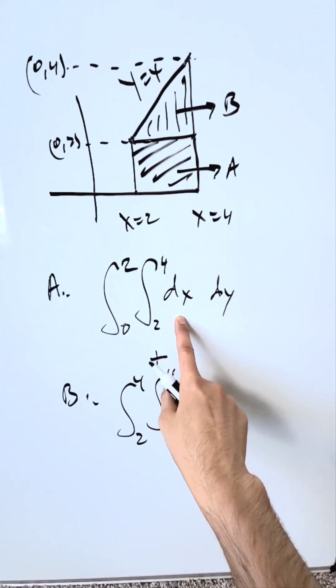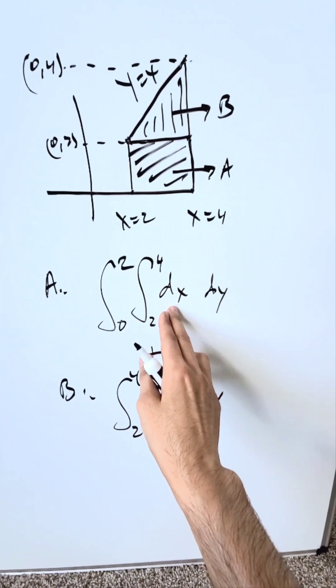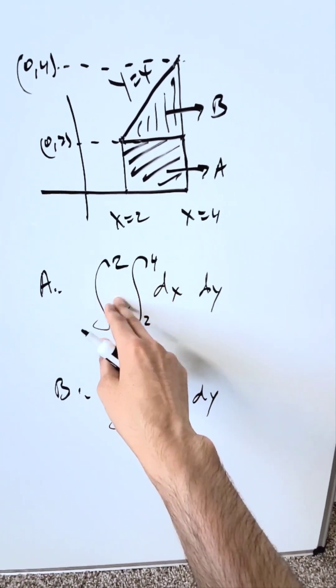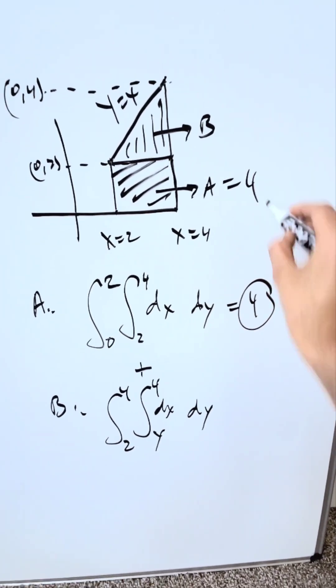If you compute this properly, and you can, do the antiderivative here, which is x. Put 4 and 2, the difference of that will be 2. The 2 will come through, and then you're doing 0 and 2 with regards to dy. You'll have here an area of 4 for A.